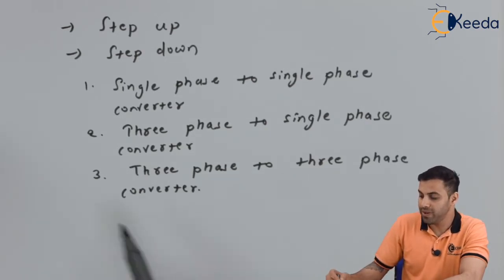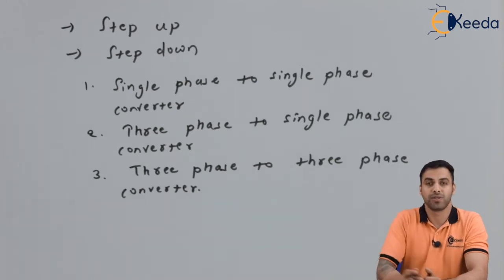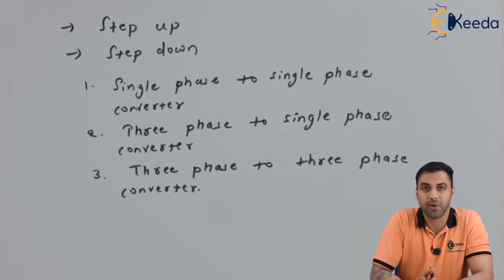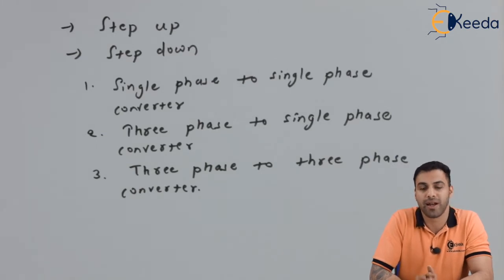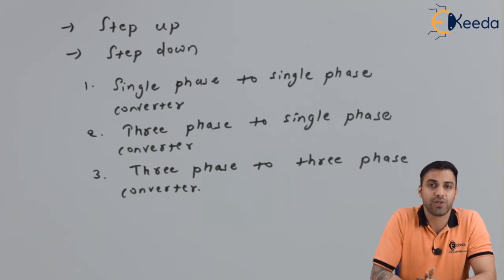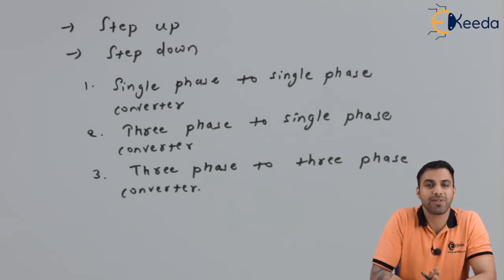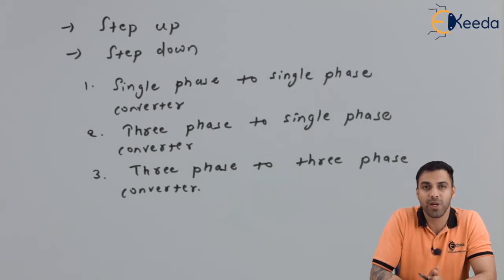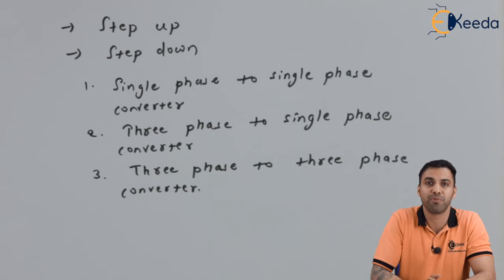The third type is the three phase to three phase converter. This has an input of three phase AC supply and an output of also a three phase AC supply, with variable frequency control. In a three phase to three phase cycloconverter, the input three phase AC supply and the output three phase AC supply are the same phase configuration, but the frequency of the output is different from the input.